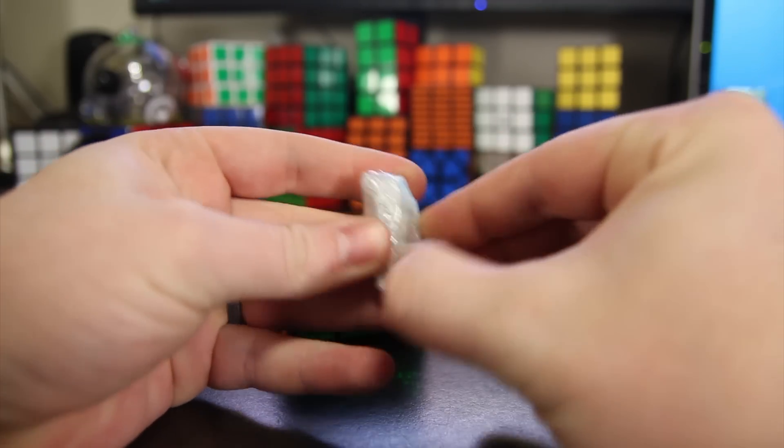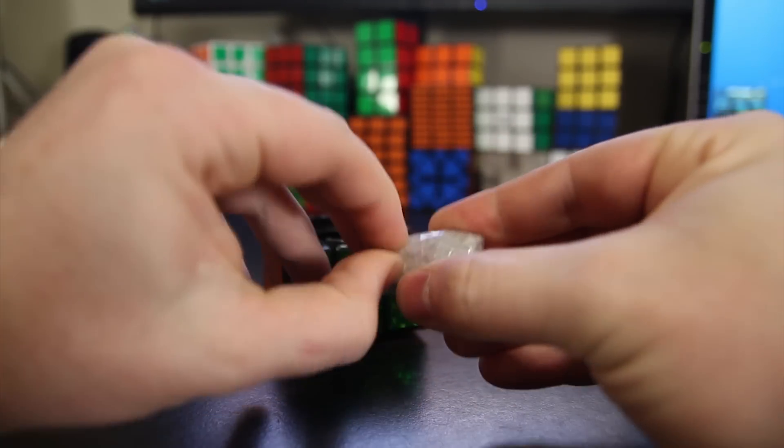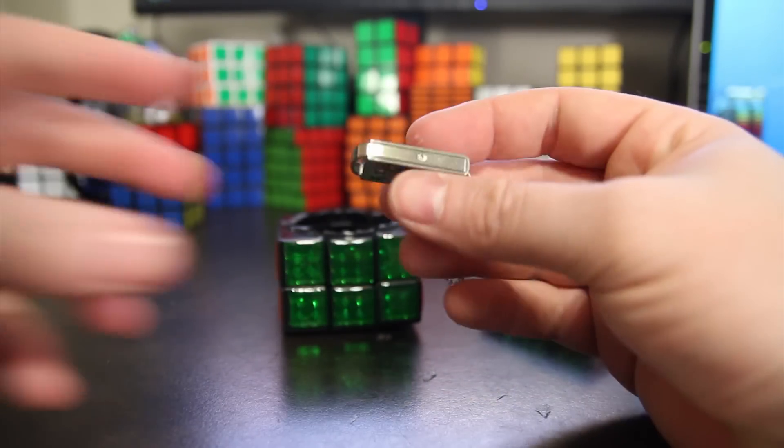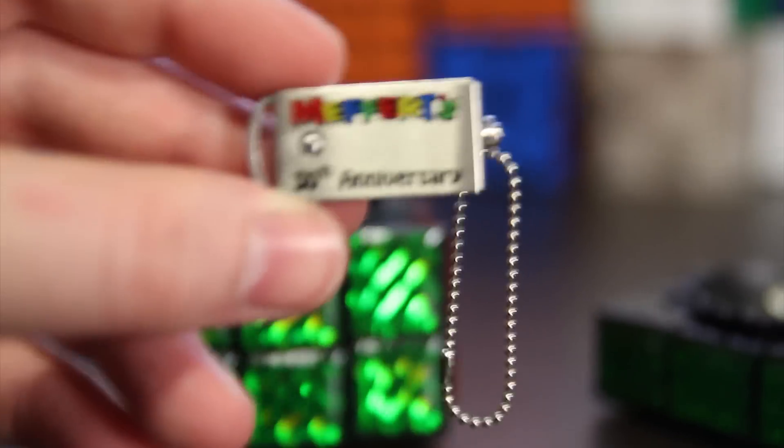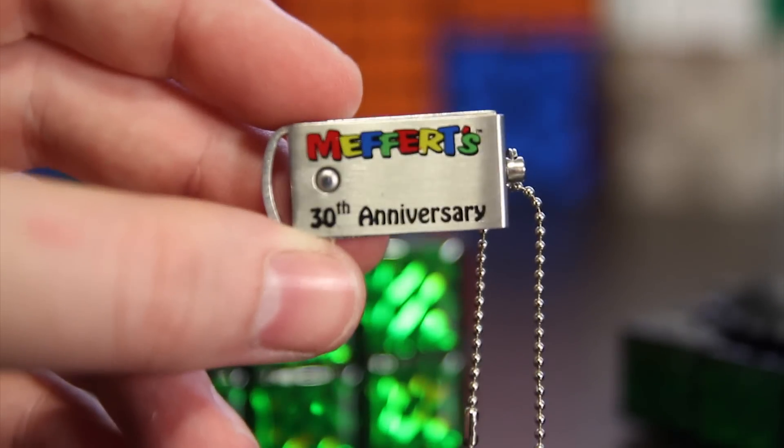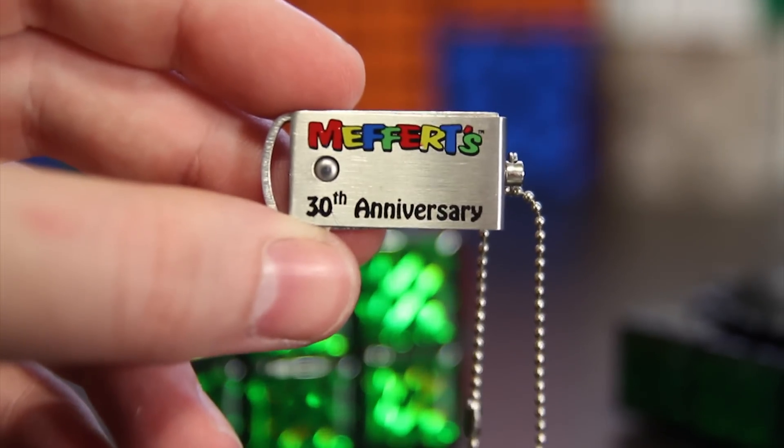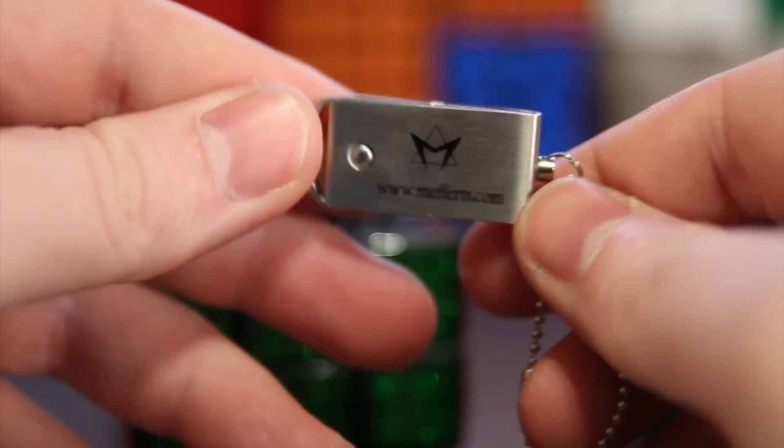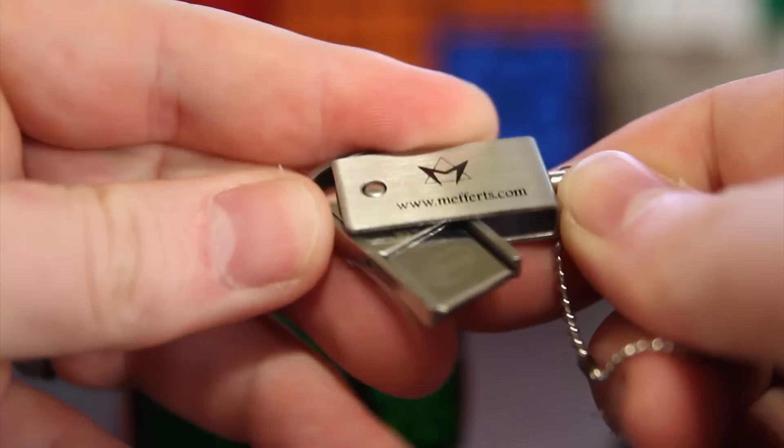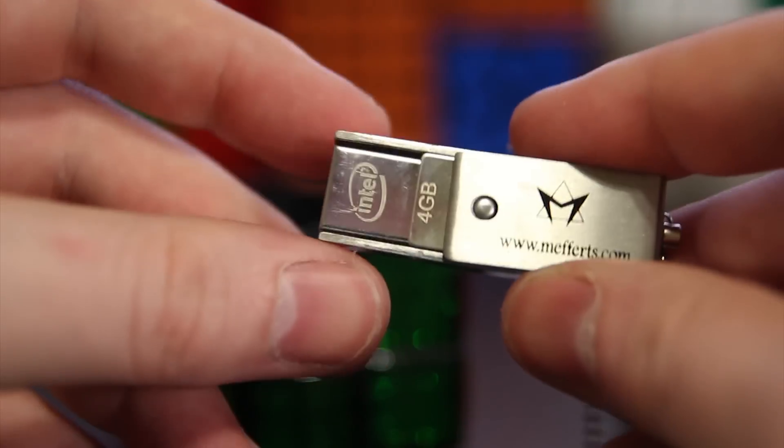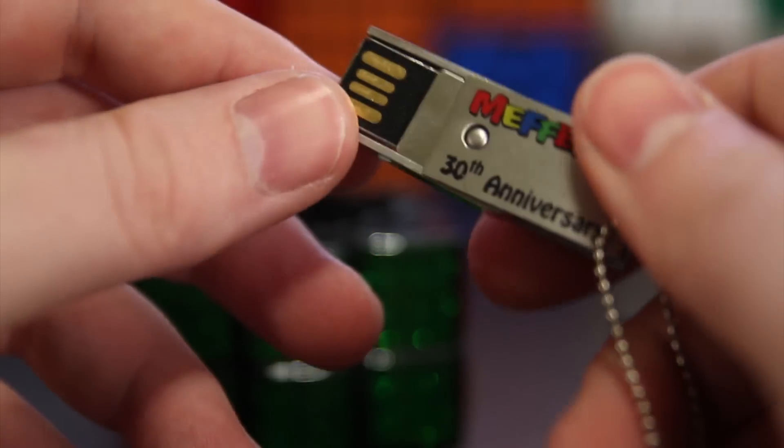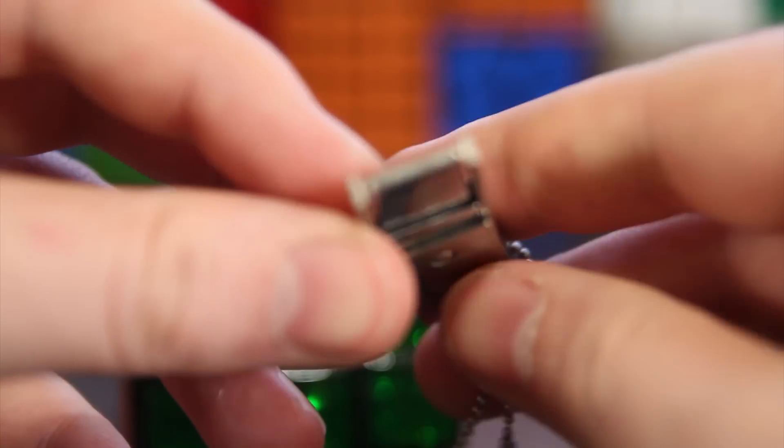What do we have here? I believe this is a USB thumb drive. So here is the thumb drive. Let me zoom in on that. You can see it says Mefferts 30th anniversary. And how does it open? Oh there we go. It says it's four gigabytes.